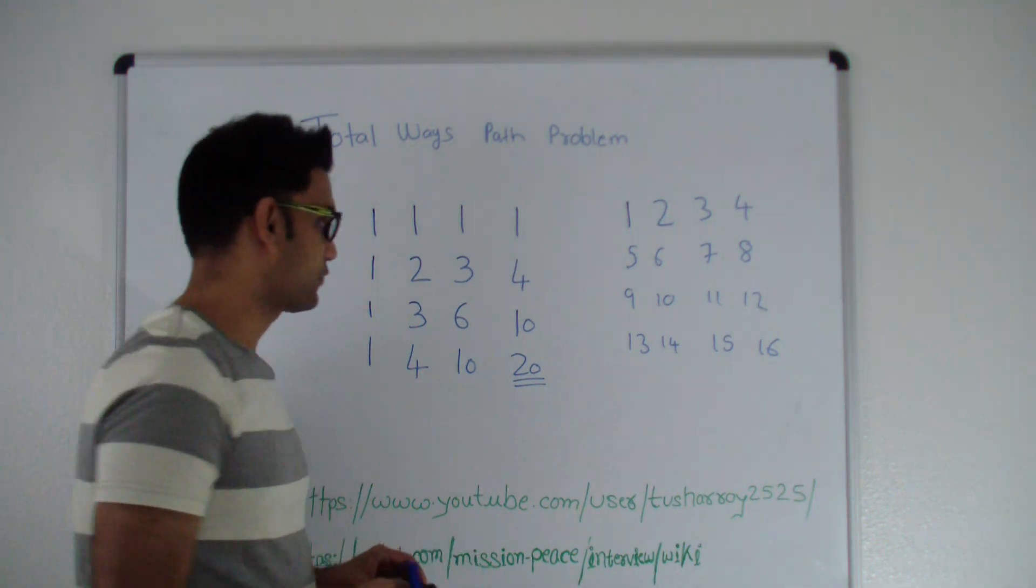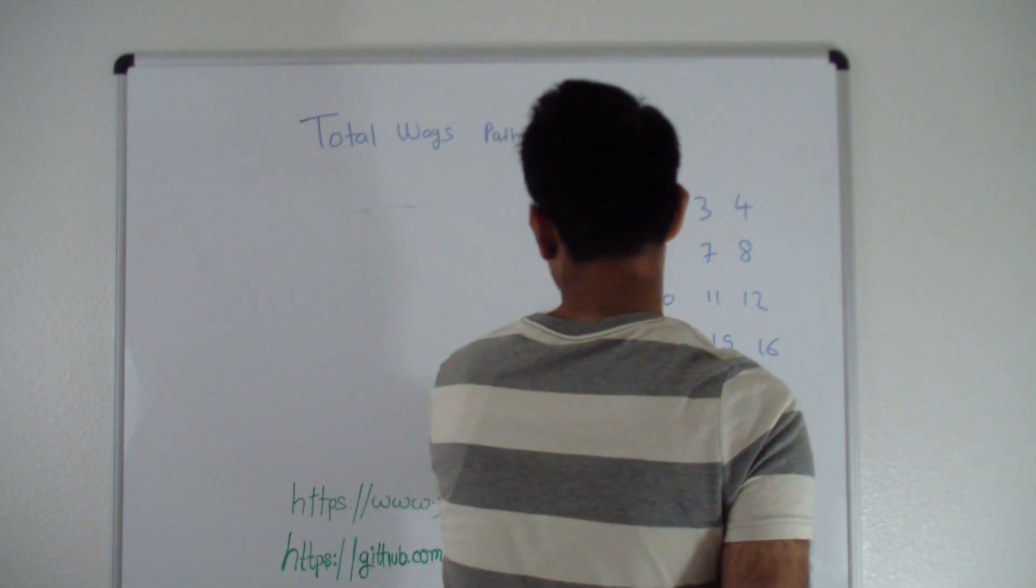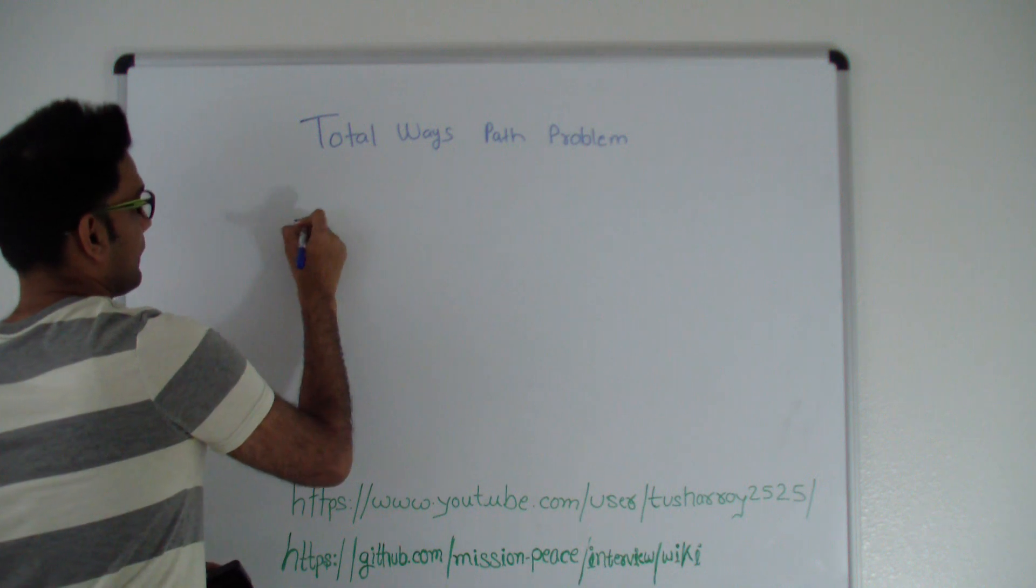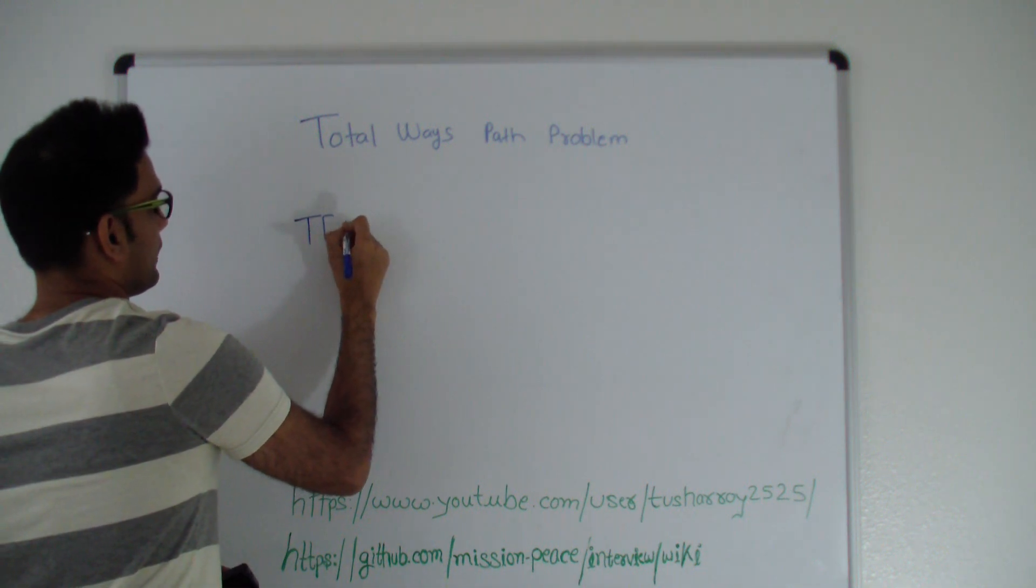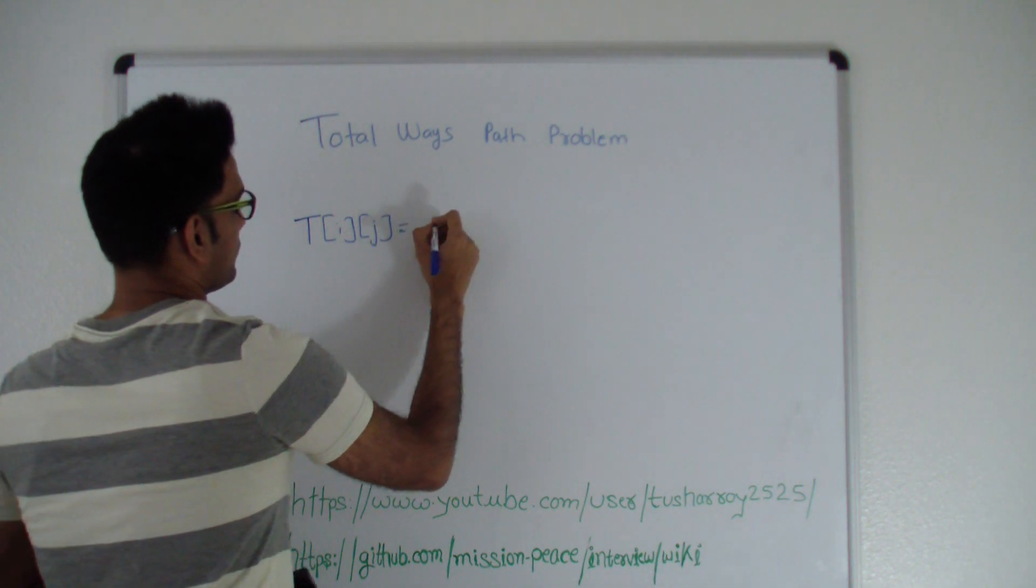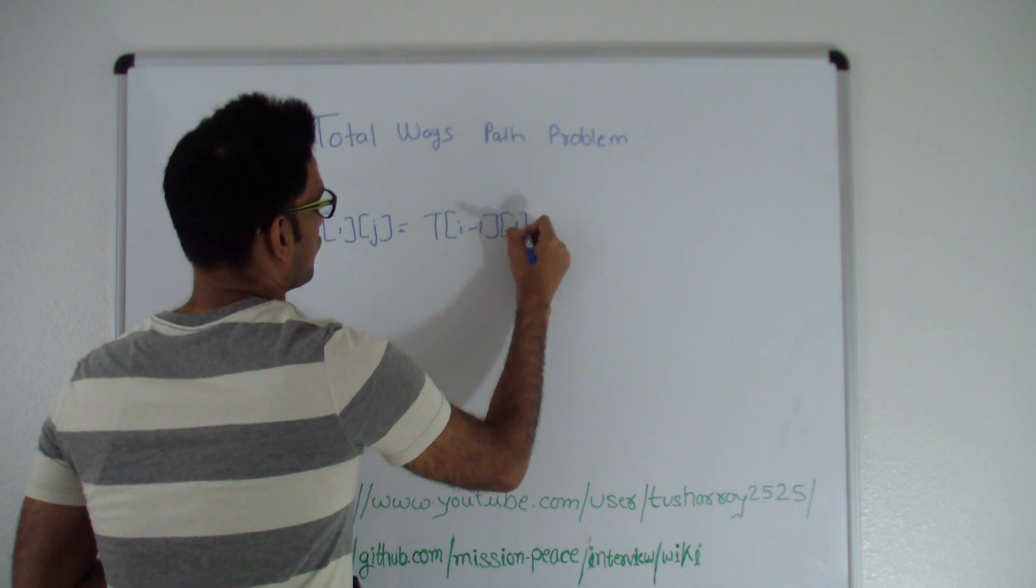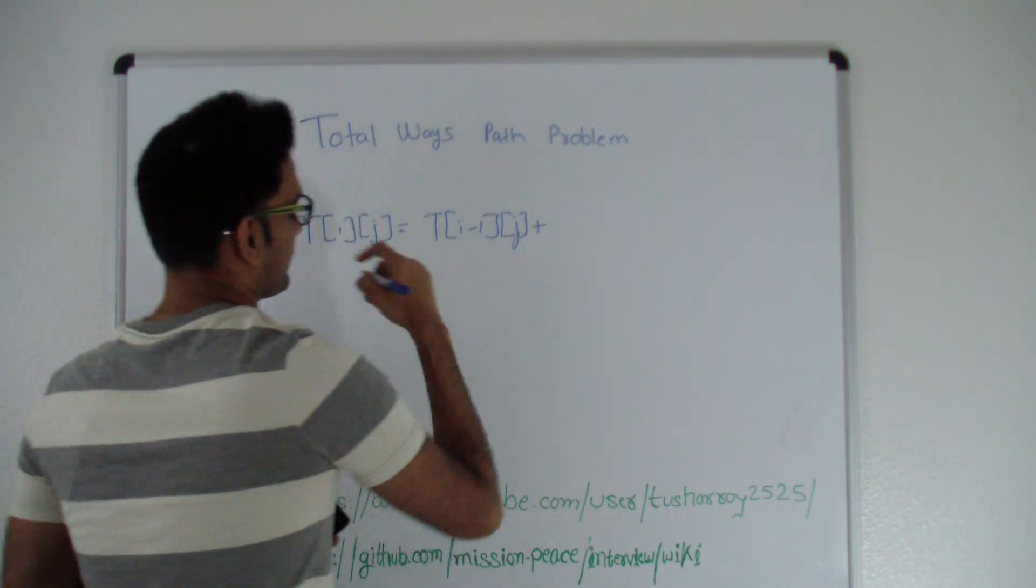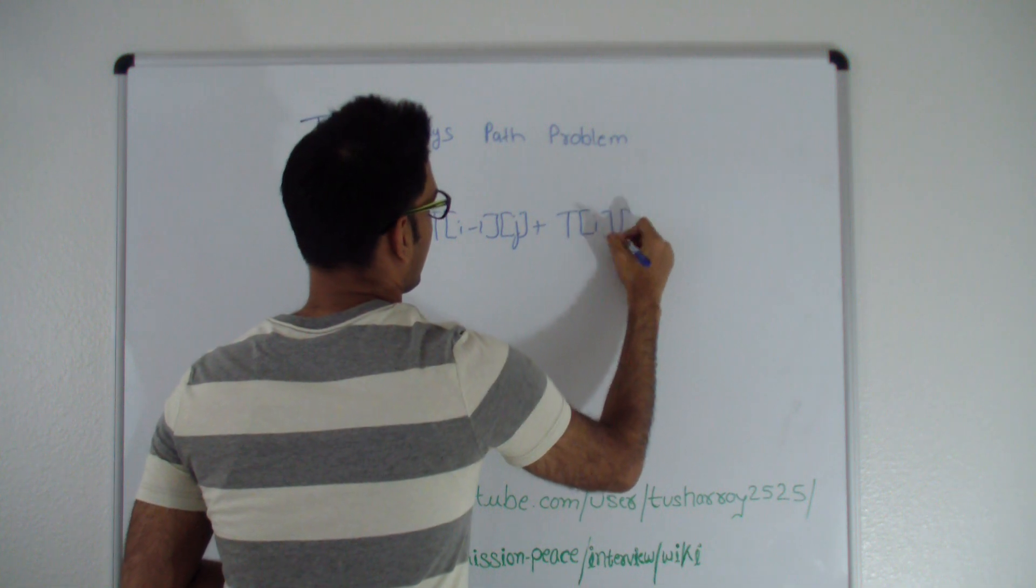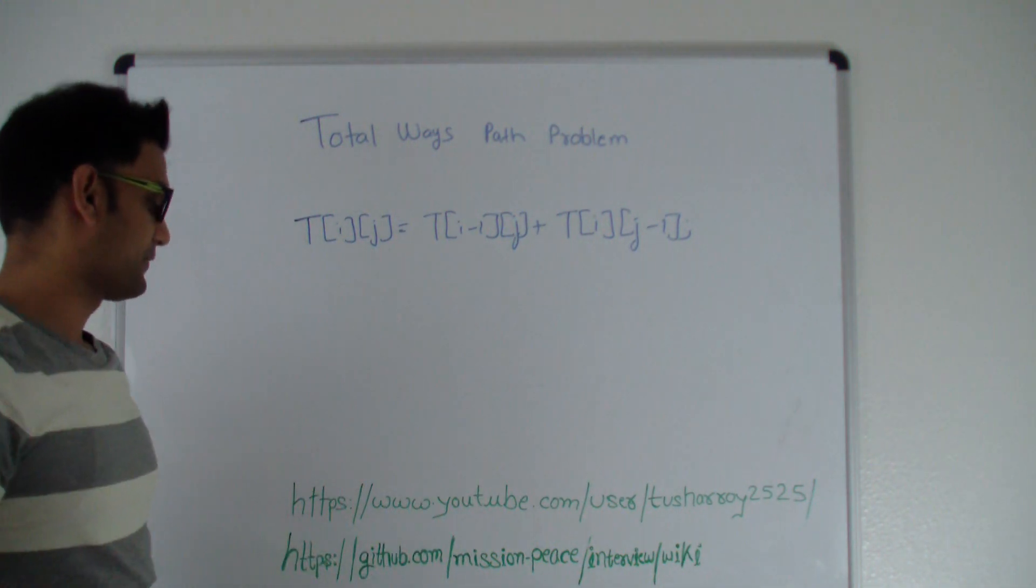Let me quickly write the formula for this one. T of i j is equal to T of i minus 1 j, total number of ways you could have come from the top, plus T of i j minus 1, which is the total number of ways you reached from the left.